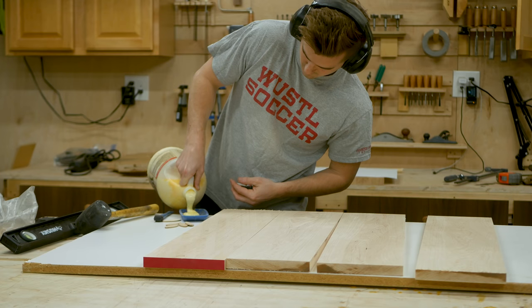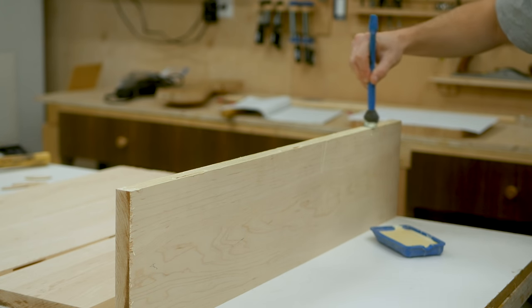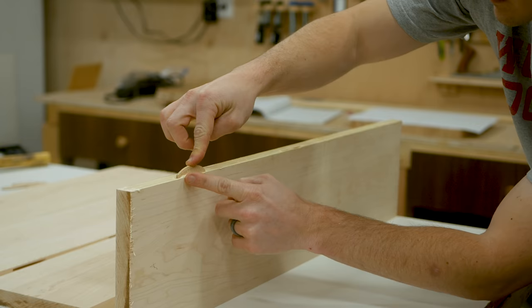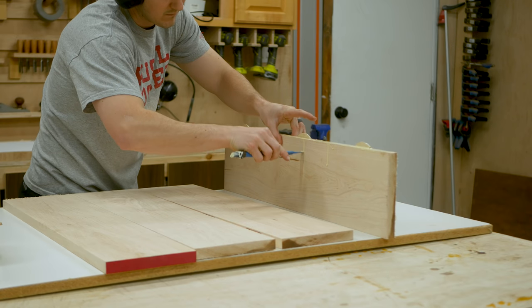Using biscuits is as simple as marking and cutting the locations on each side based on the size of the biscuit you're using, applying a bunch of glue to the joints and biscuits and then repeating the process on the other side and attaching together.